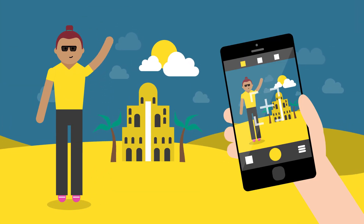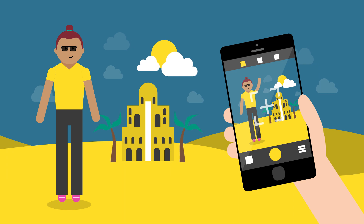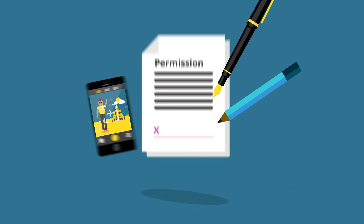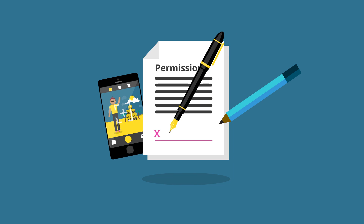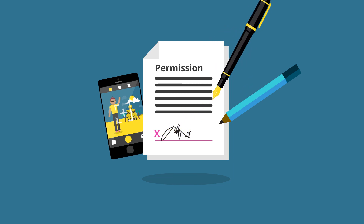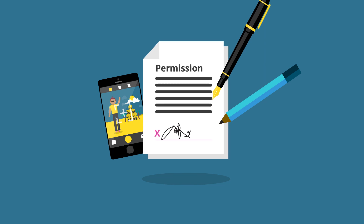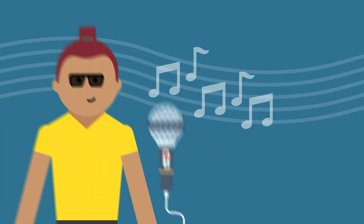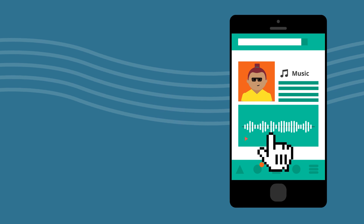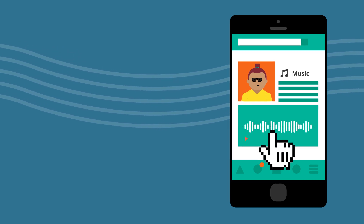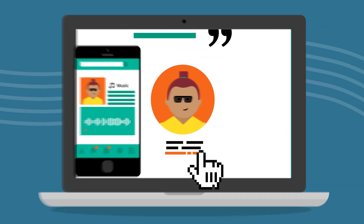Before you take photos, audio or video recordings of people, it is good practice to seek their permission. There may be additional requirements you need to be aware of depending on the location, so it is always best to check first. If you are using content created by someone else, always reference and attribute your sources.